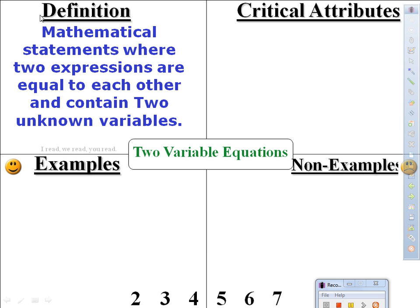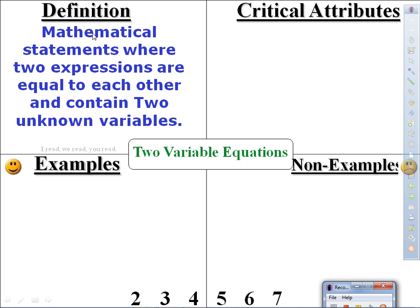Definition of two-variable equations: mathematical statements where two expressions are equal to each other and contain two unknown variables. The simple way of reading that definition is: two expressions equal to each other, and they contain two unknown variables.